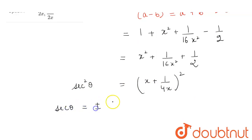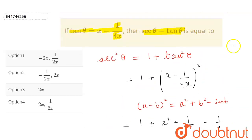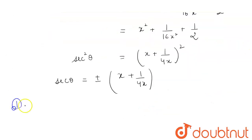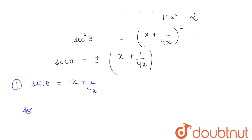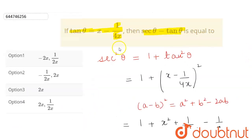From here we can get the value of sec θ to be equal to plus or minus of (x plus 1 upon 4x). Now the question was to find sec θ minus tan θ. Taking the first case where sec θ equals (x plus 1 upon 4x), so sec θ minus tan θ will be equal to (x plus 1 upon 4x) minus the value of tan θ which is (x minus 1 upon 4x).